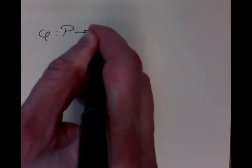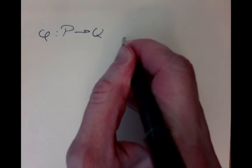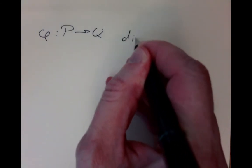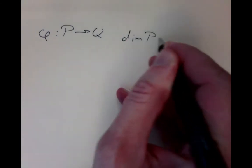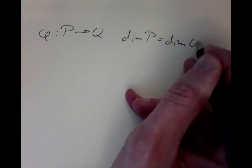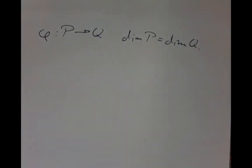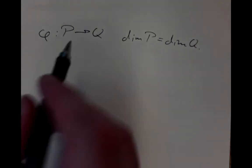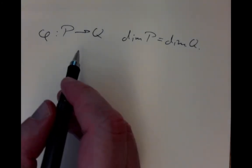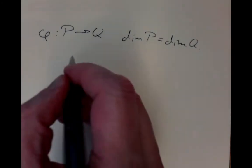Suppose we have a smooth map phi taking P to Q — manifolds — and to keep things simple, let's suppose they have the same dimension. We're hoping to count the number of times that a given point in Q is struck by the map.